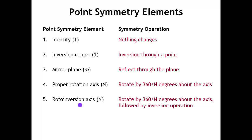Sometimes people describe these point symmetry operations as entirely being rotational symmetry operations. The reason is that the first three elements can all be defined as either a proper rotation axis or a rotoinversion axis. The identity is the same as a one-fold proper rotation axis — rotating by 360 degrees divided by one is no change. The inversion center is a one-bar rotoinversion axis — rotate by 360 and then invert. And the mirror plane can be defined as a two-bar rotoinversion axis, as we'll see in a moment.